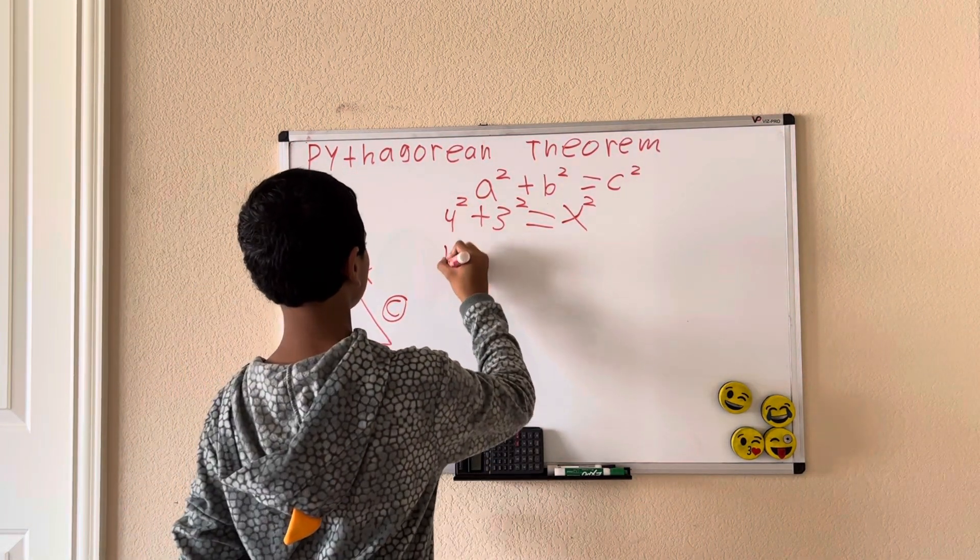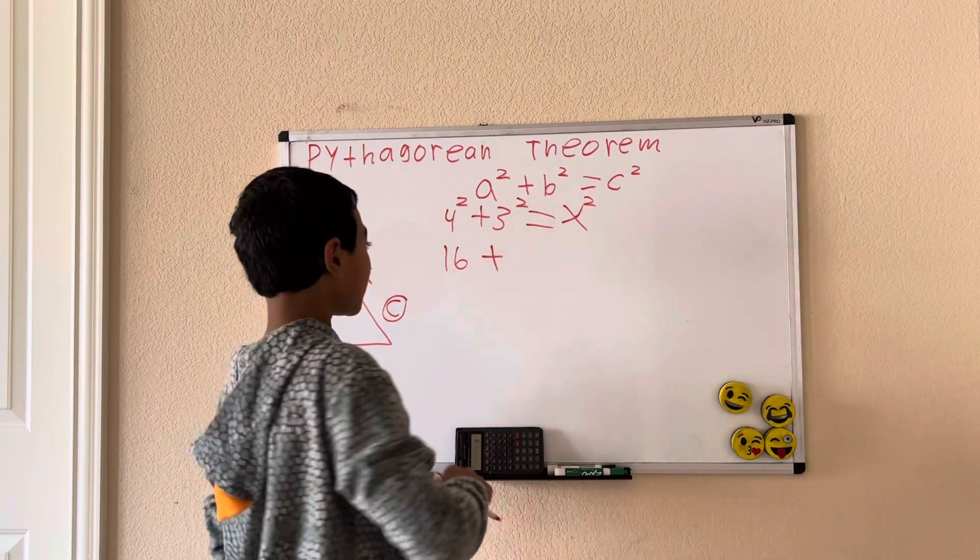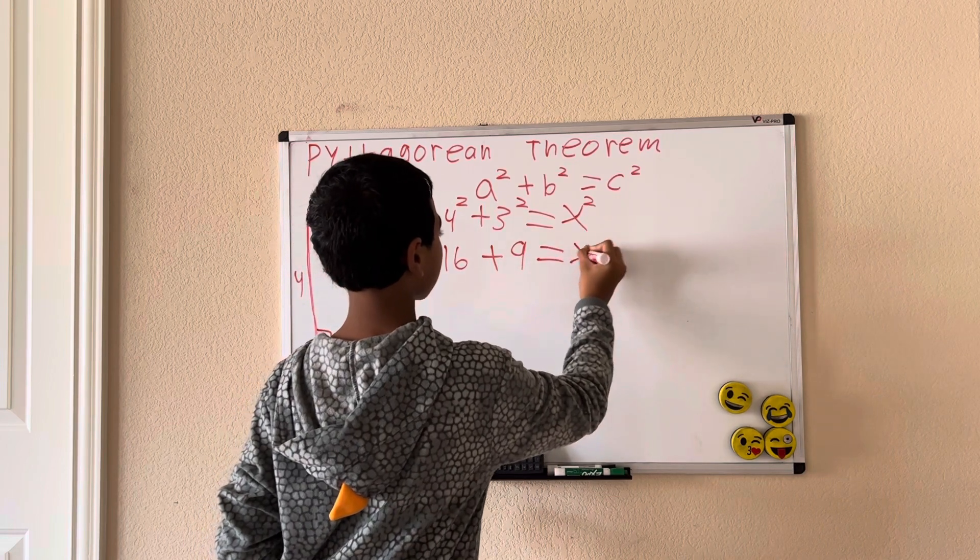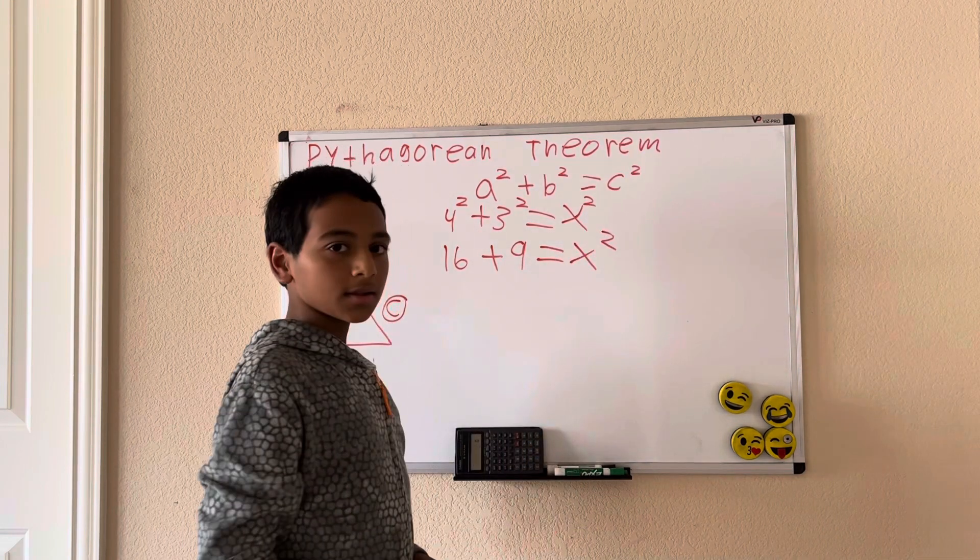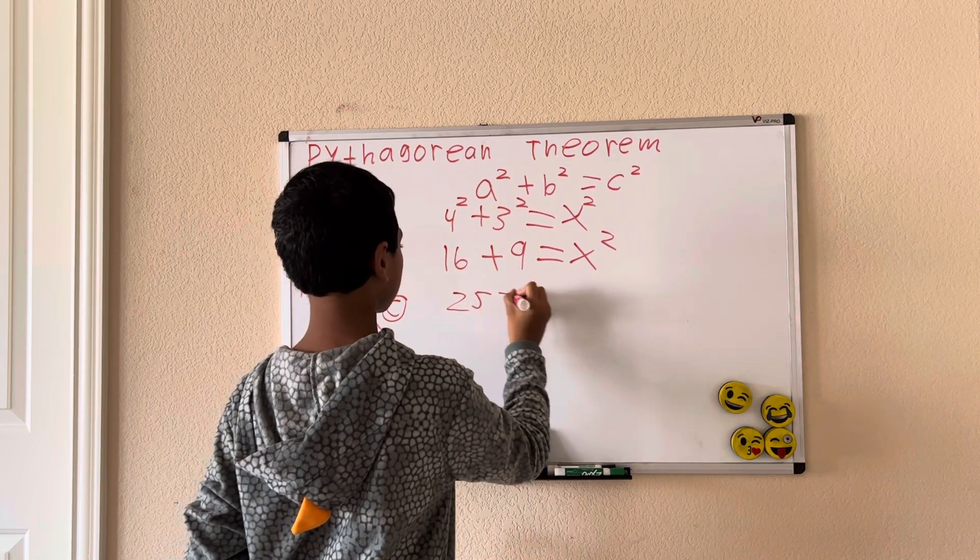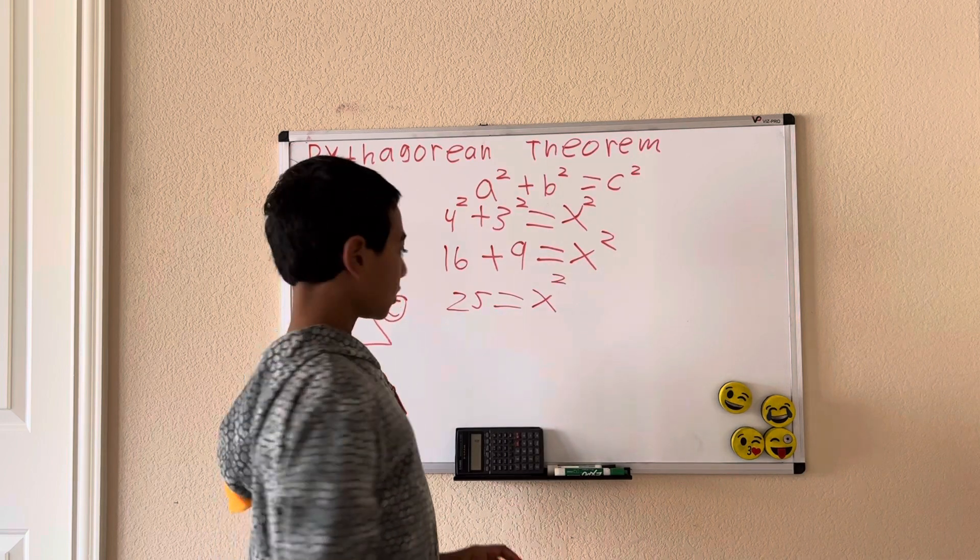4² is 16. 16 + 3² is 9 = X². 16 + 9 is 25 = X².